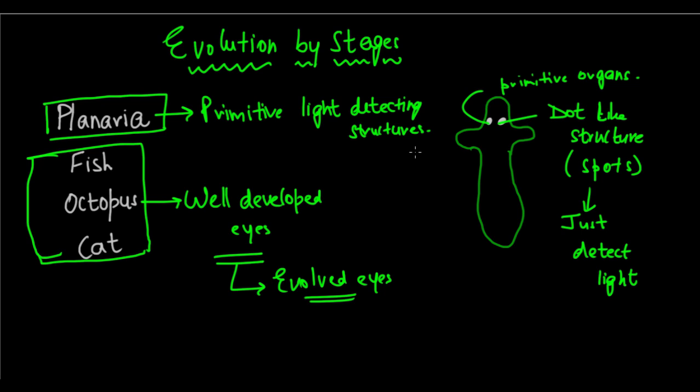These eyes have developed according to need — they have not developed overnight. Early, primitive organisms just had dot-like structures to detect light. But as the need to see became necessary, the eyes began evolving to see much more and to have a wider field of view. Now if you look at human eyes, they are so well-developed, with almost a 180-degree angle field of view. This happened through stages, through generations and generations. So this is an example of the evolution of eyes.